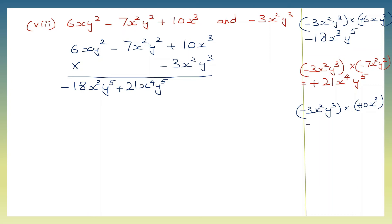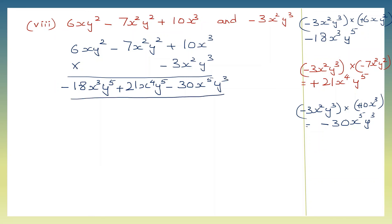Now we'll take minus 3x squared y cubed into 10x cubed. The signs: minus into plus is minus. 3 into 10 is 30. x to the power of 2 and x to the power of 3 will make it x to the power of 5. y cubed is by itself. So we've got minus 30x to the power of 5 and y cubed. So let's write that: minus 30x to the power of 5 and y to the power of 3. So this is our answer. We'll stop with this for now students — we'll continue the remaining questions in our next video. Thank you.